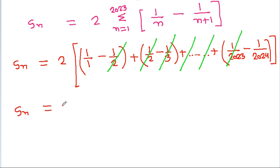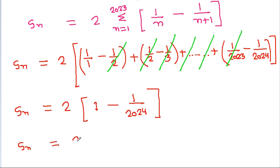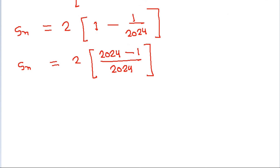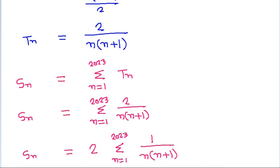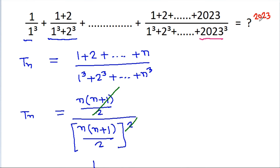So Sn equals 2 times (1 − 1/2024), which equals 2 times (2024−1)/2024 = 2 times 2023/2024. Since 2/2024 = 1/1012, Sn equals 2023/1012.